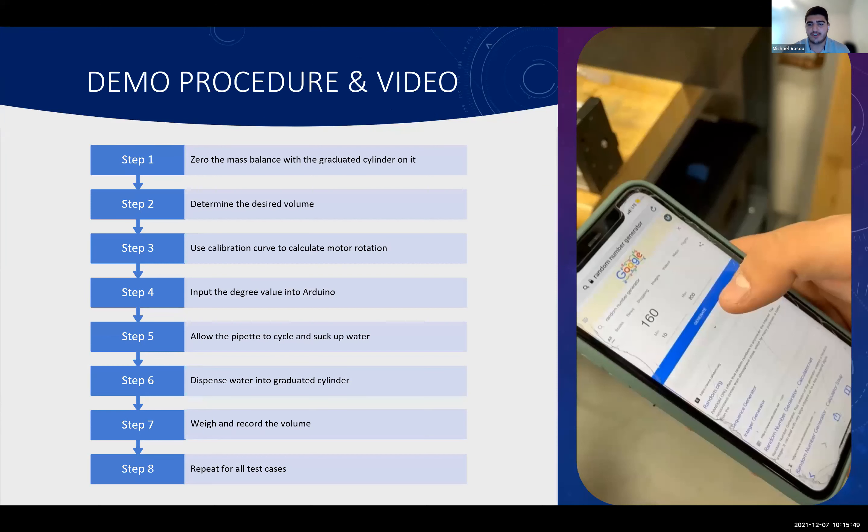So before we get to the video on the right which showcases our final design, just a little bit about the procedure, about how we went on to test each case. So first we started out with the graduated cylinder, put it on the mass balance and hit the zero button. We determined the desired volume we wanted to reach, went back to that calibration curve I just discussed, found out what degrees our volume corresponds to, put that into Arduino, allowed the pipetter to run through the process, dispense the water back into that graduated cylinder, and then we were able to weigh and record the volume. This process was repeated for all the test cases. Like I said, the video on the right goes through the steps basically. And also it is important to note that we do not have the final motor housing on top of our design, just so we can allow everyone to see the internal components move and how they work.